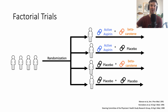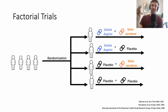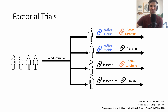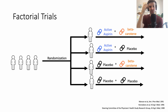Factorial trials are even more complex. Rather than randomizing each patient to one treatment, you randomize each patient to two treatments, resulting in four different combinations. For example, in one of the most famous factorial designs, patients could receive aspirin plus beta-carotene, aspirin plus a placebo for beta-carotene, placebo plus beta-carotene, or two placebos. This makes things relatively efficient because you're comparing multiple things at once.